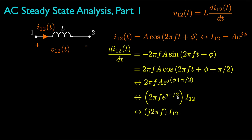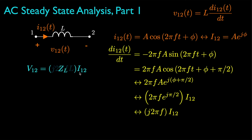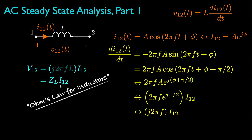If we note that e^(jπ/2) is equal to j — that is the square root of minus 1 — then the result is j times 2πf times the original phasor for the current. When we scale the derivative of the current by the inductance, the phasor representation for the voltage across the inductor is equal to j times 2πf times L times the original phasor for the current. This term that multiplies the current is called the impedance for the inductor, and we can write the phasor form as V equal Z times I, which you might think of as a complex-valued Ohm's law for inductors.